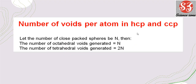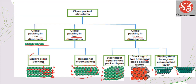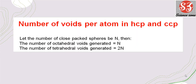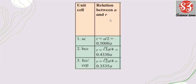Next is number of voids per atom in HCP and CCP. HCP forms when 3 hexagonal layers are arranged in ABAB type, and CCP forms when layers are in ABCABC type. If the number of spheres or particles is N, then octahedral voids = N and tetrahedral voids = 2N. Regarding the relation between radius R and edge length A: in simple cubic R = a/2; in body-centered cubic R = (√3 a)/4; in face-centered cubic R = (√2 a)/4.